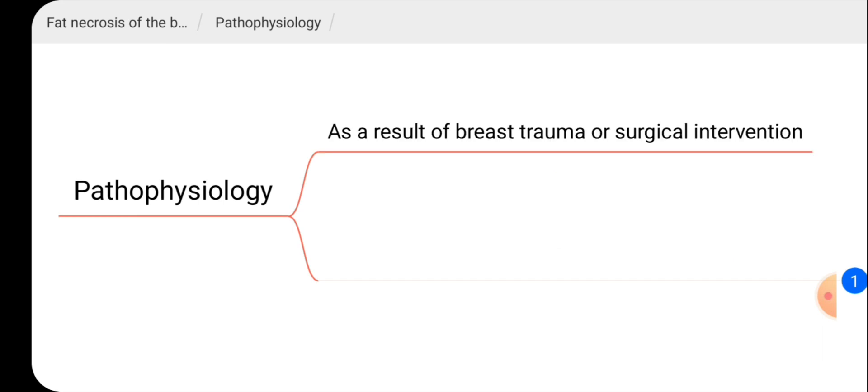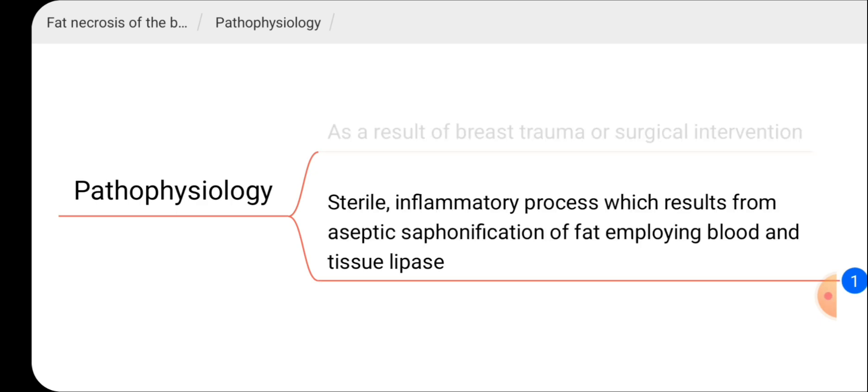Fat necrosis occurs as a result of breast trauma or surgical intervention. The definition is sterile inflammatory process which results from aseptic saponification of fat employing blood and tissue lipase. So it is a sterile process - no infection is involved, however inflammation is there, usually after breast trauma and aseptic saponification of fat.